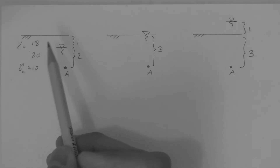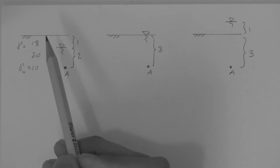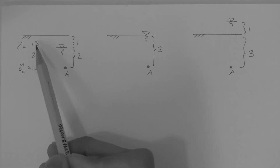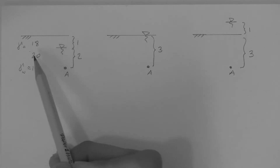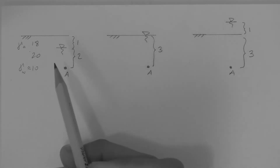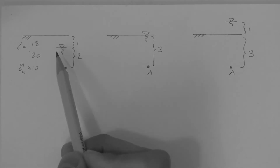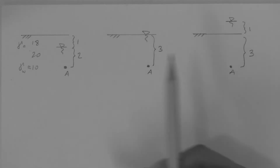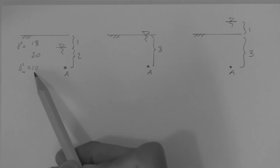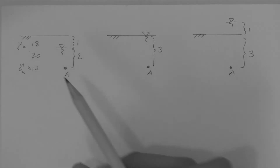The unit weights of the soil are given: 18 kilonewtons per meter cubed for the dry condition and 20 kilonewtons per meter cubed for the saturated condition, and we assume that the unit weight of water is 10 kilonewtons per meter cubed.